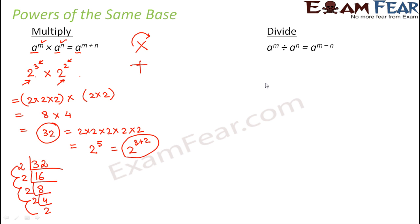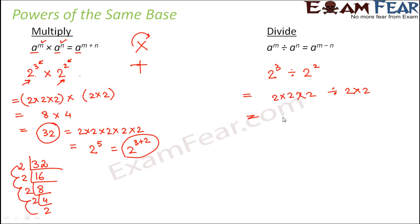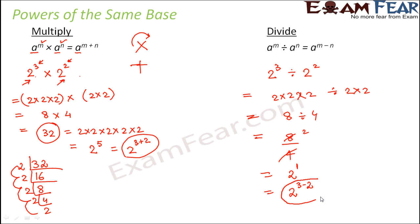Now what happens in case of division? Just the opposite — when you divide two numbers, you basically subtract the powers. Let us verify: 2 to the power 3 divided by 2 to the power 2. So 2 × 2 × 2 divided by 2 × 2 is 8 divided by 4, which is 2. And 2 is nothing but 2 to the power 1, and 1 can be written as 3 minus 2. So 2 to the power 3 divided by 2 to the power 2 equals 2 to the power 3 minus 2. Whenever we have two numbers with same base but different exponents: if multiplying, exponents get added; if dividing, exponents get subtracted.